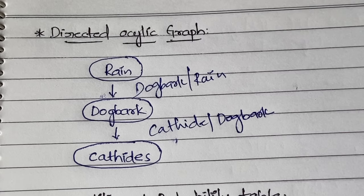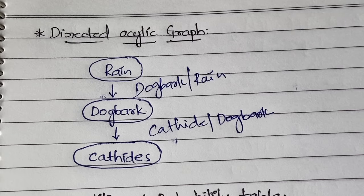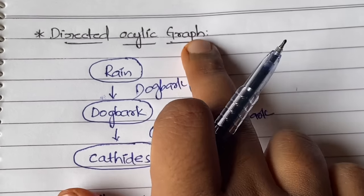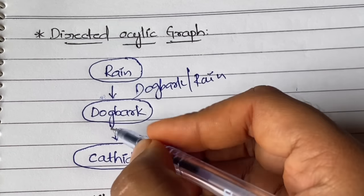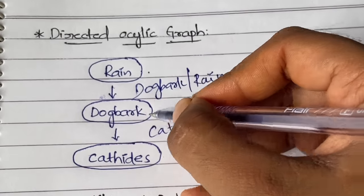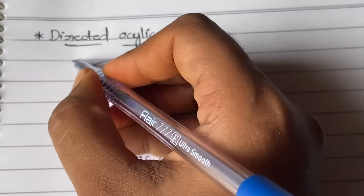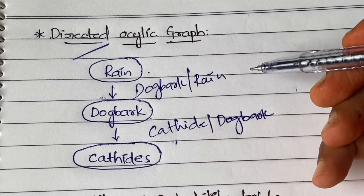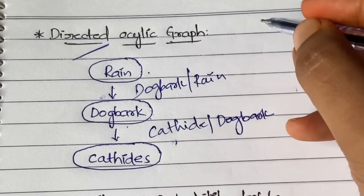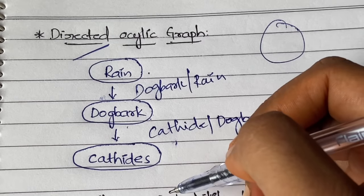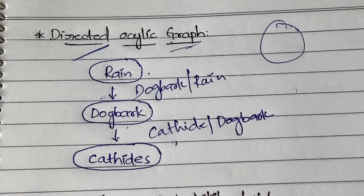So this is a condition that may or may not happen all the time. Now, the relationship to a Directed Acyclic Graph: it is a graph with directions in the form of arrows, showing that Rain is a parent of Dog Bark, and Dog Bark is a parent of Cat Hide. It is 'acyclic' because there are no cycles — no closed loops. That's what makes it a Directed Acyclic Graph.